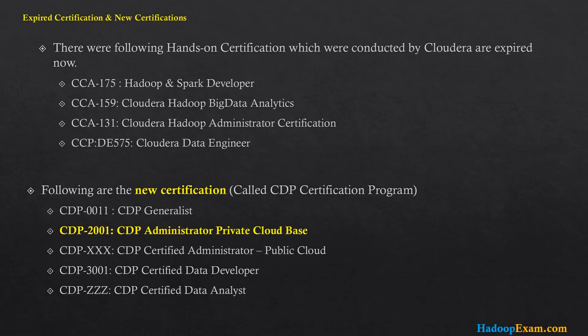As you remember, there were previously four certifications which were more around Hadoop and Spark. The certification names were CCA175 for Hadoop and Spark, CCA159 for analytics, 131 for administrator, and SPY certified for data engineer. All four of these certifications have been retired by Cloudera, and they have come up with a new certification that is a better fit with their new platform — Cloudera Data Platform, which is a combination of Cloudera as well as Hortonworks, with many optimizations especially around security and governance.